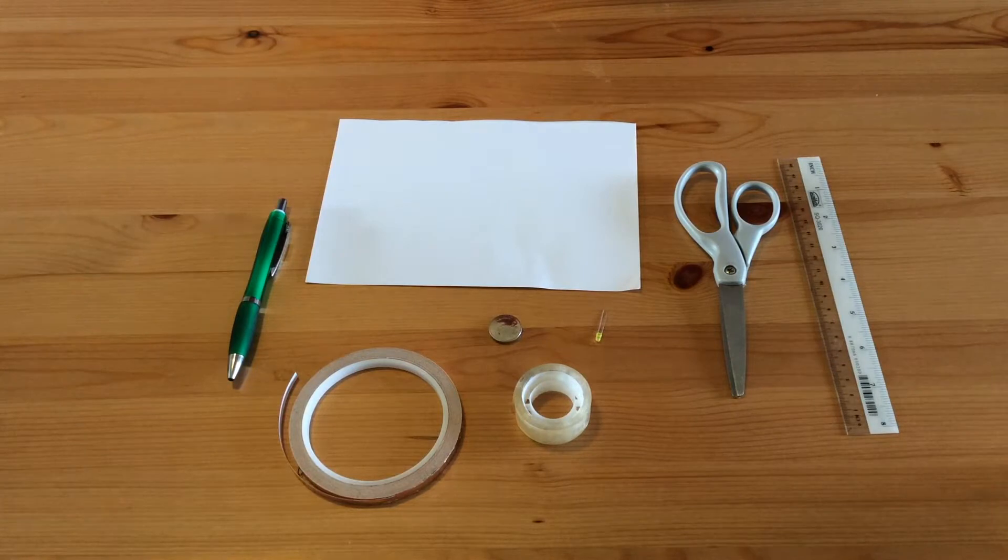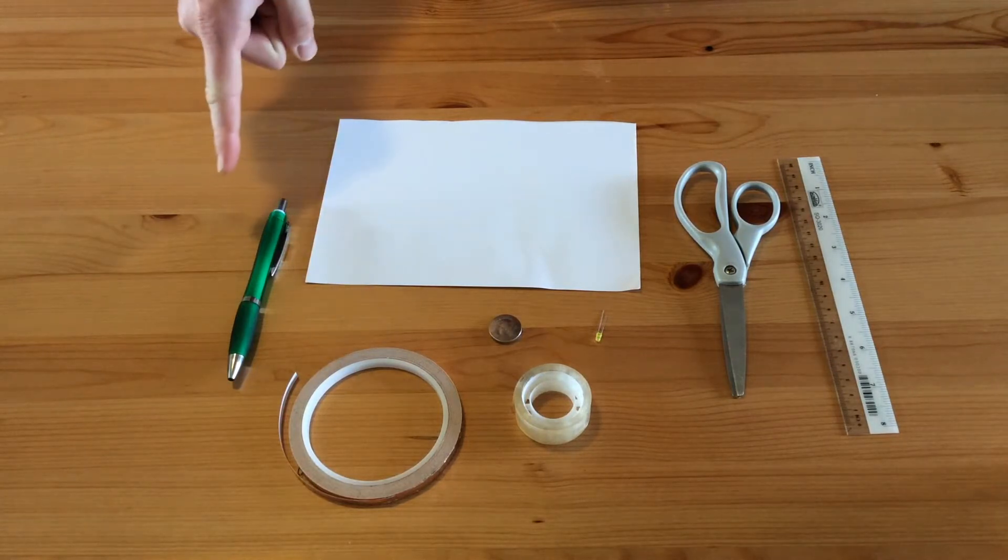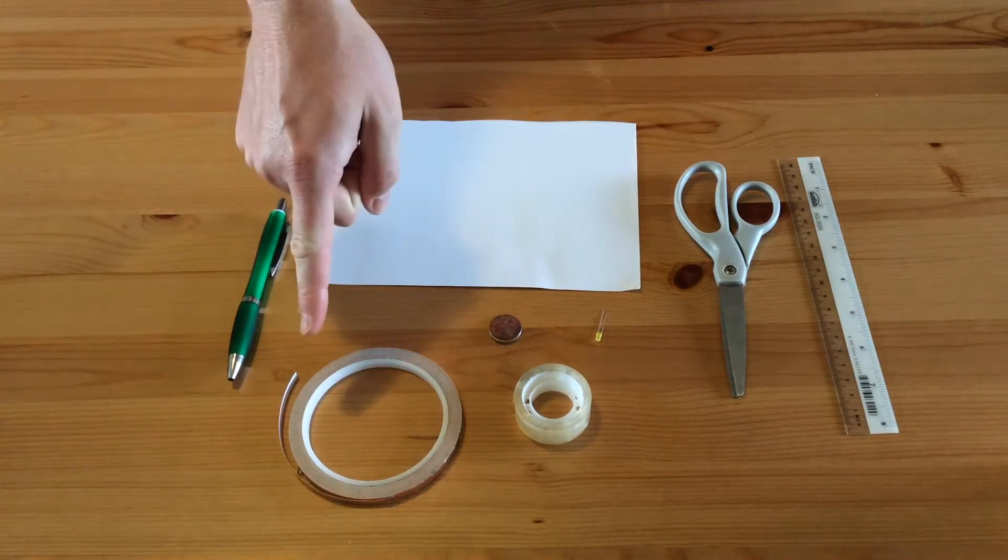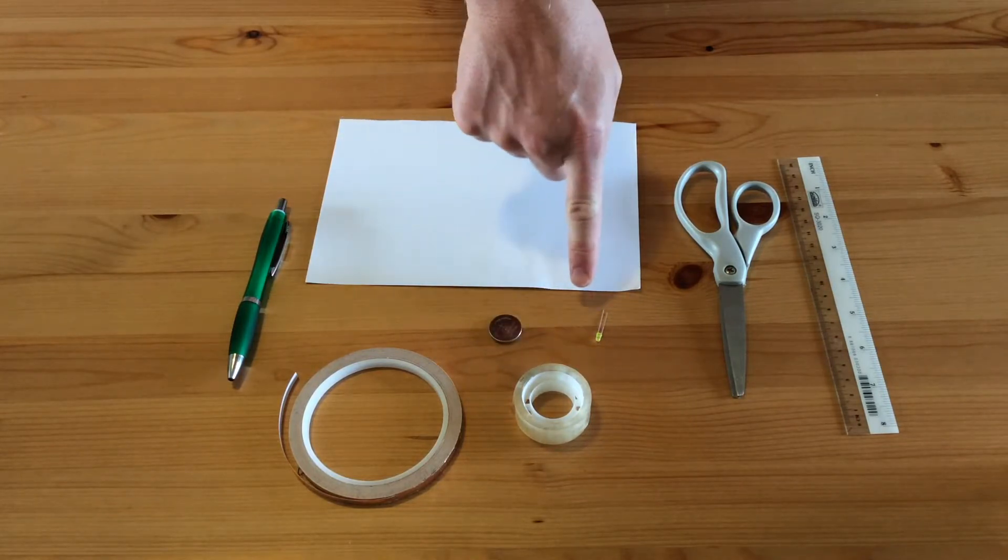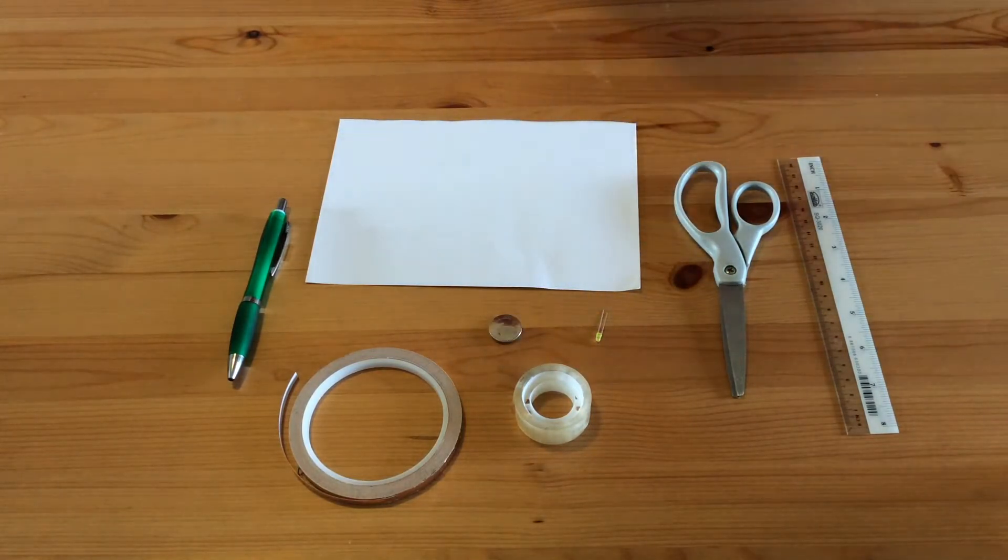To make a simple paper circuit, you're going to need the following: a pen, paper, copper tape, coin cell battery, sellotape, an LED bulb, scissors, and a ruler.